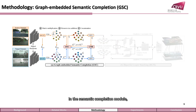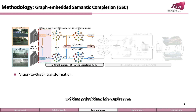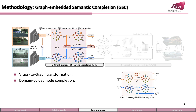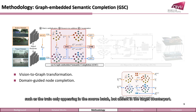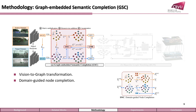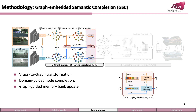In the semantic completion module, we first sample fine-grained feature points inside and outside object instances with ground truths and pseudo-labels, and then project them into graph space. We then sample around the class centers in the latent graph space and generate normal nodes in missing classes, such as the train class only appearing in the source batch but absent in the target counterpart. These class centers are saved in a memory bank. After that, we deploy a single-layer graph convolutional neural network to propagate the cross-image semantics, and use enhanced graph nodes to update the memory bank in turn.